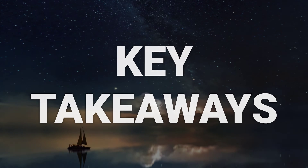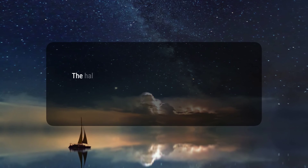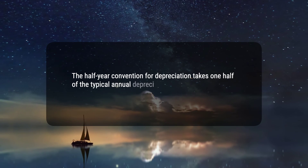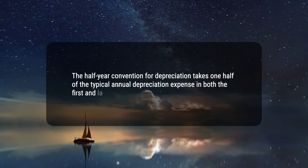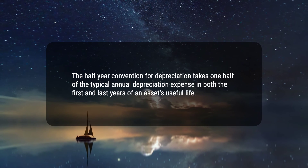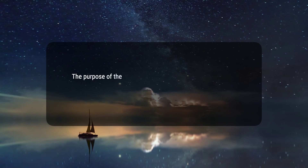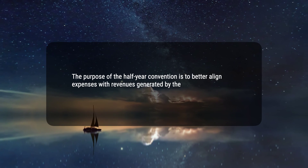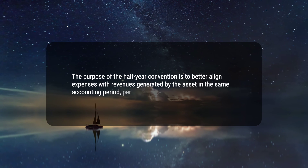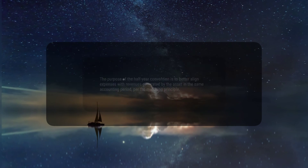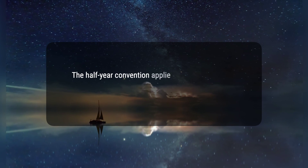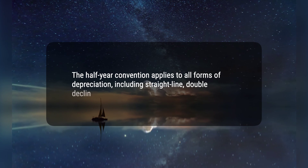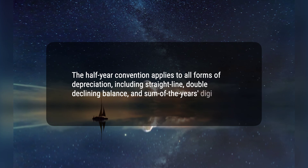Here are three key takeaways. 1. The half-year convention for depreciation takes one-half of the typical annual depreciation expense in both the first and last years of an asset's useful life. 2. The purpose of the half-year convention is to better align expenses with revenues generated by the asset in the same accounting period, per the matching principle. 3. The half-year convention applies to all forms of depreciation, including straight-line, double-declining balance, and sum of the year's digits.